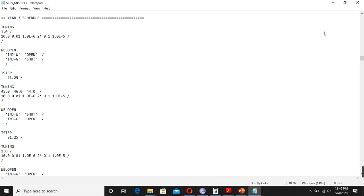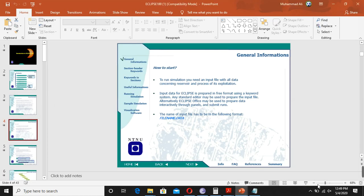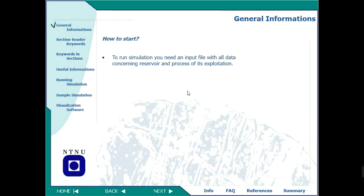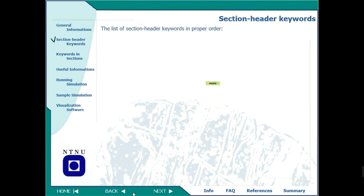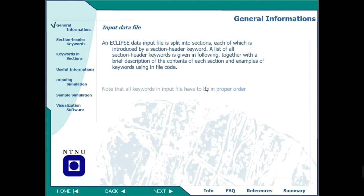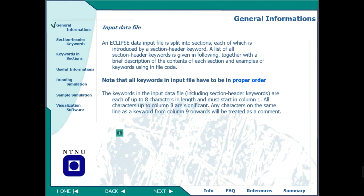It comes with experience and by spending time on this software. So this was the data file — we play with the data file and then we run it. Today our objective is just to look into this data file in much detail. This data file has many options — it has eight main sections, and for each section you have to put in a lot of information and data.